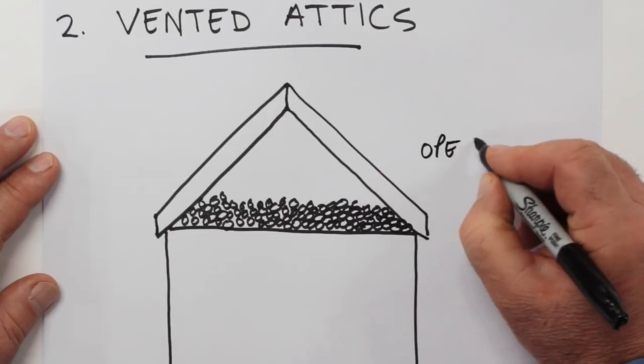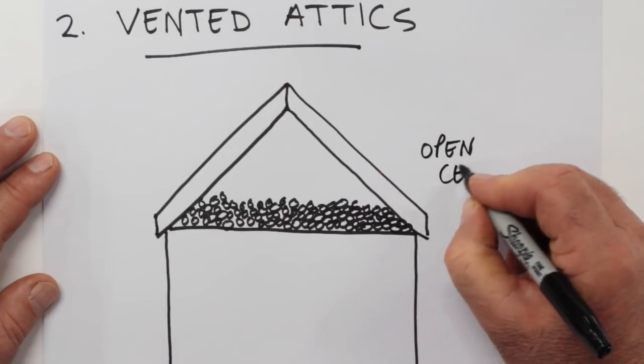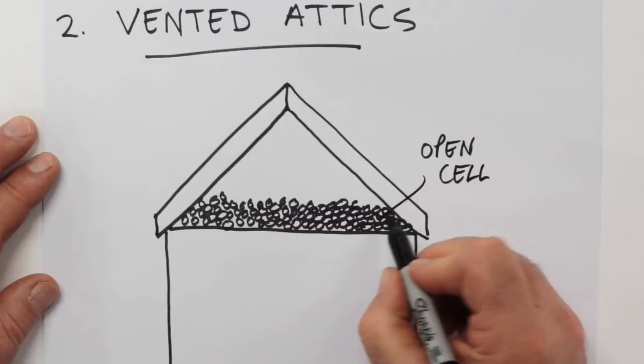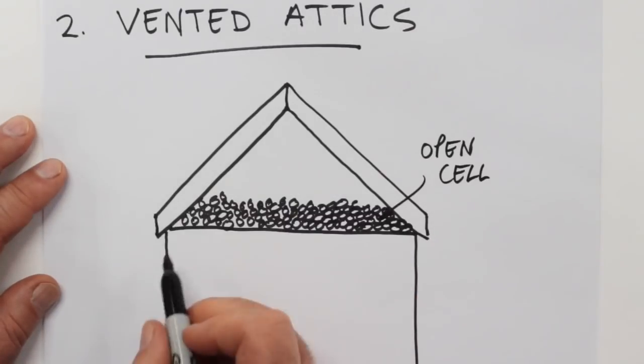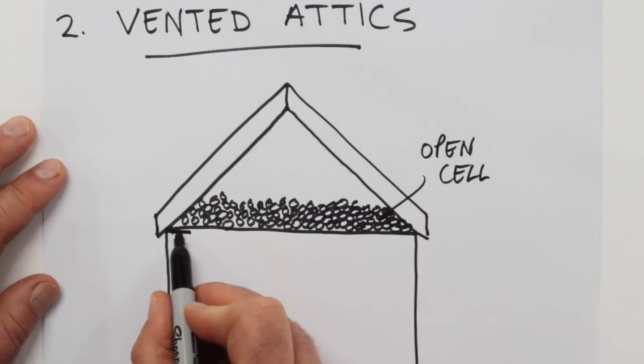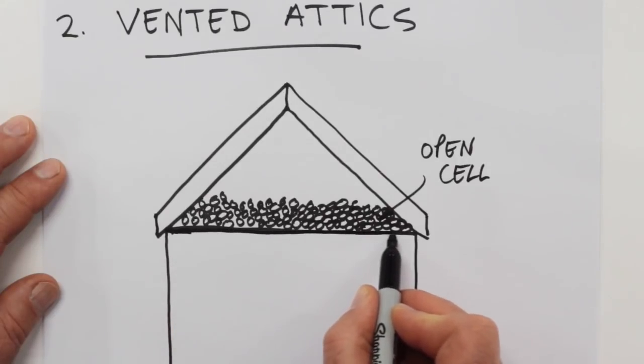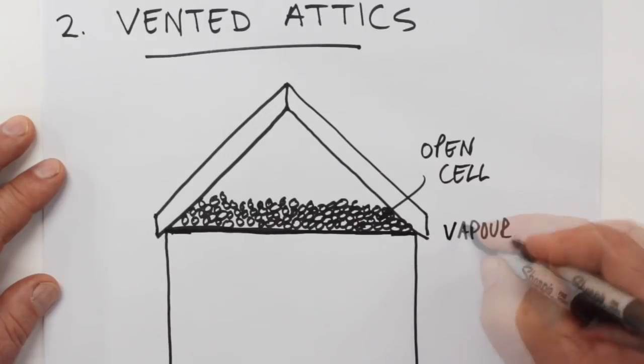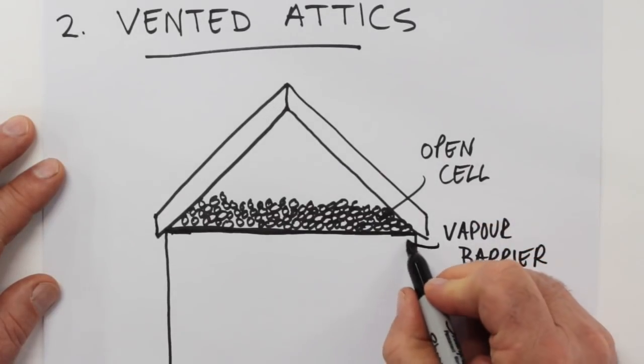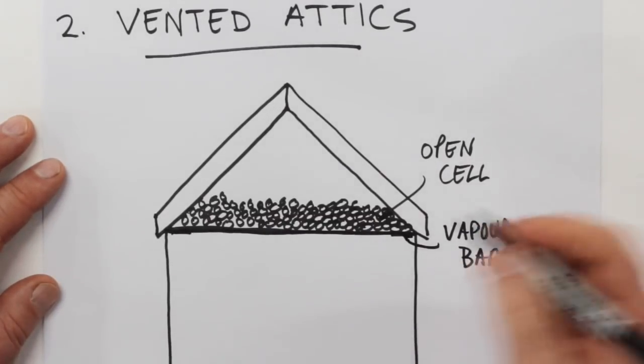Now as I said, this is open celled foam, which means it can't stop the passage of water vapor, but it can dry and that's kind of one of its pluses. In an application like this, there would be a vapor barrier of some kind on the warm side of the insulation. That would be required for this to work properly.